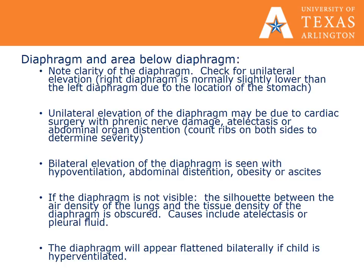The diaphragm and areas below the diaphragm should be noted for clarity. Check for unilateral elevation. The right diaphragm is normally slightly lower than the left due to the location of the stomach. Unilateral elevation of the diaphragm may be due to cardiac surgery with phrenic nerve damage, atelectasis, or abdominal organ distension. Count the ribs on both sides to determine the severity.